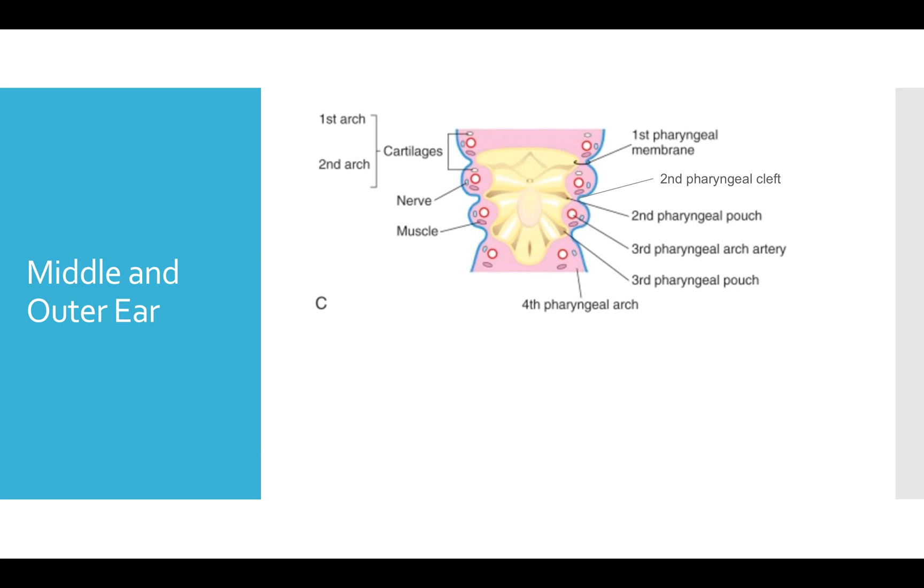So the middle and outer ear, moving on, has origins in the pharyngeal apparatus. So this begs a review of the pharyngeal apparatus itself.